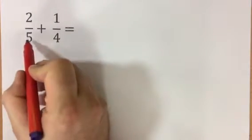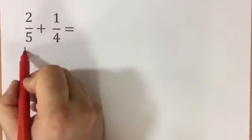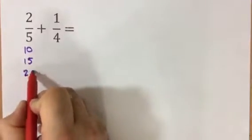So one way of doing this is to list the multiples of 5 here: 5, 10, 15, 20.